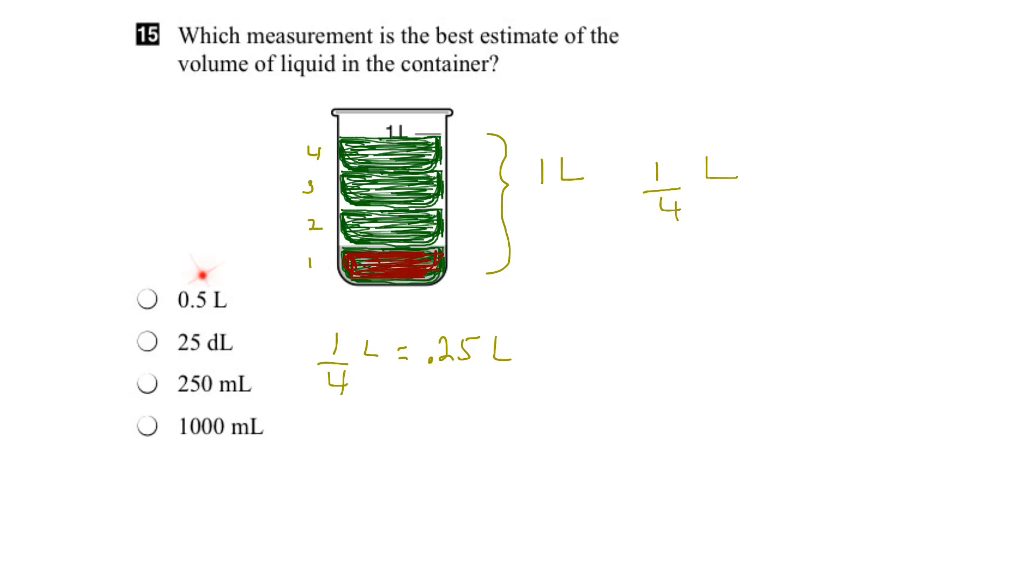Let's start looking at the options. The only one here in liters is the first one, which is 0.5 of a liter. Well, our estimate is 0.25 of a liter, so we know that that's not one of the options. The other options are given in deciliters and milliliters, so we're going to need to convert this 0.25 liters into these units.